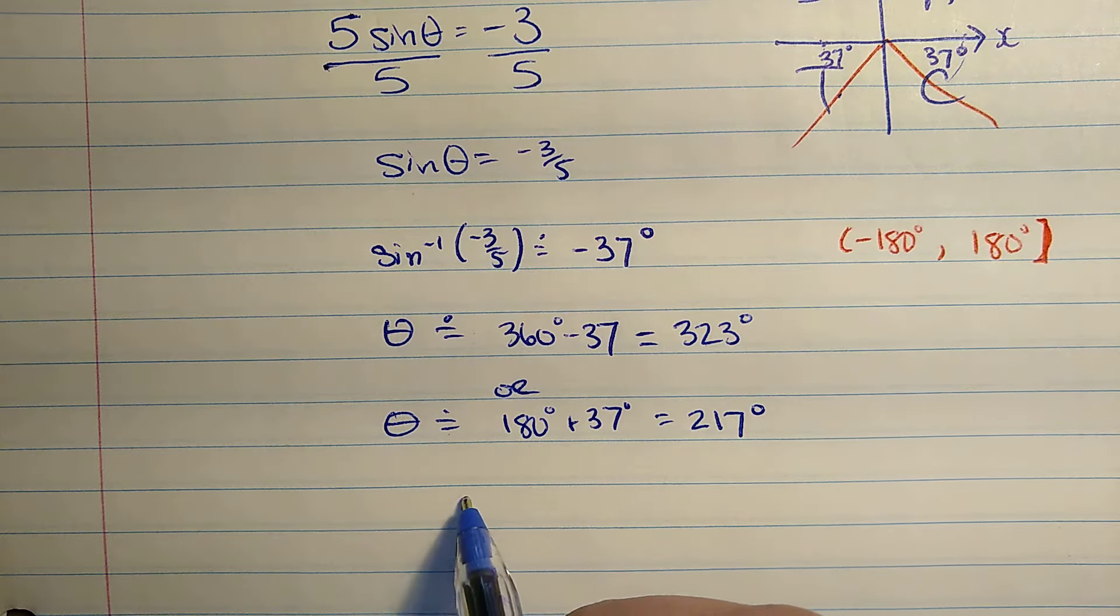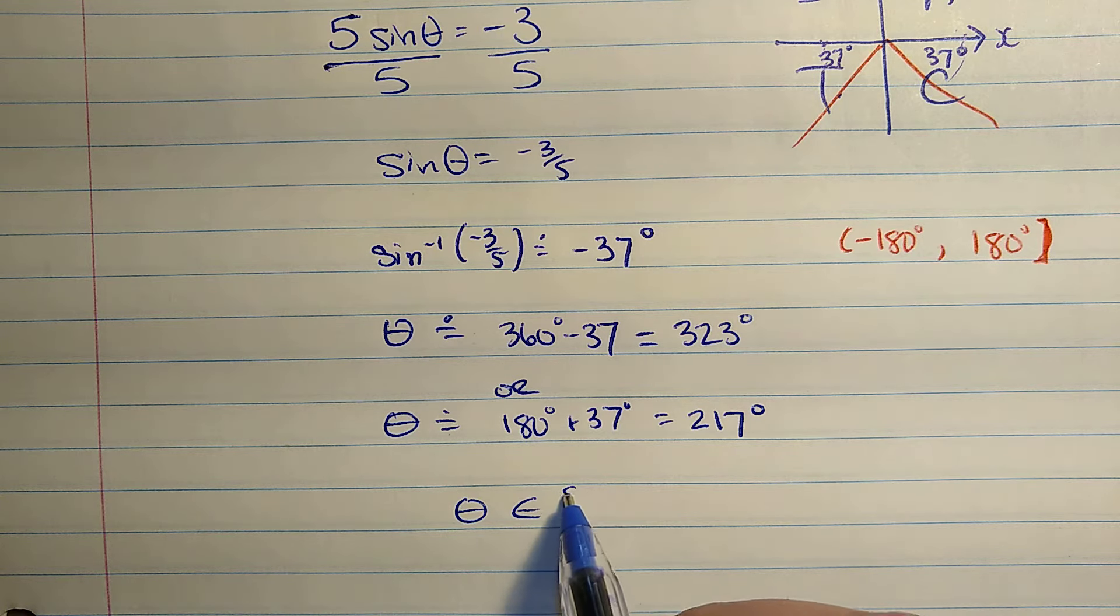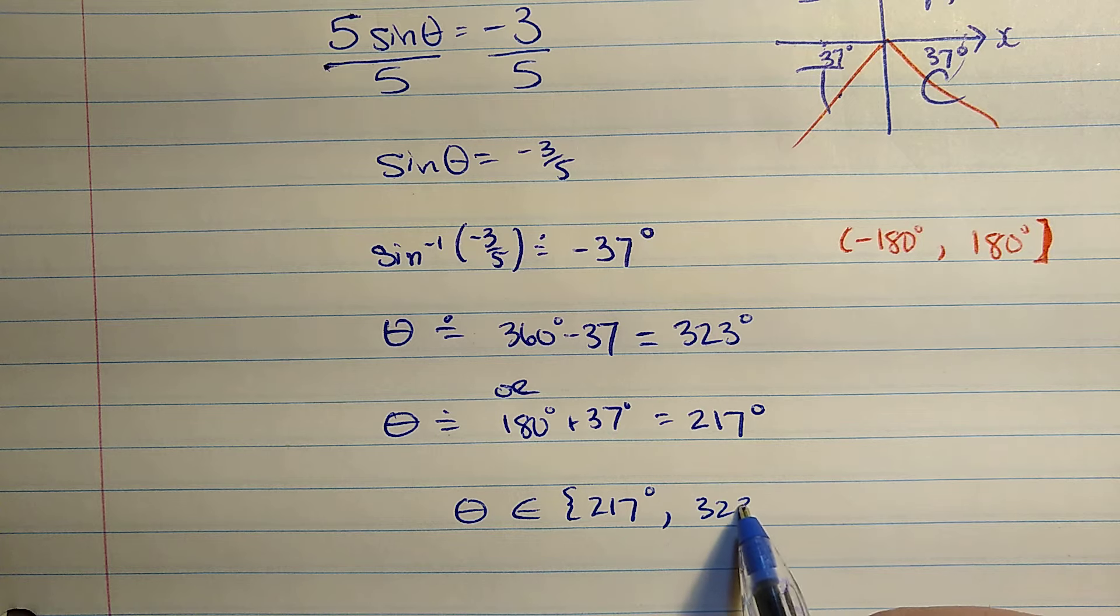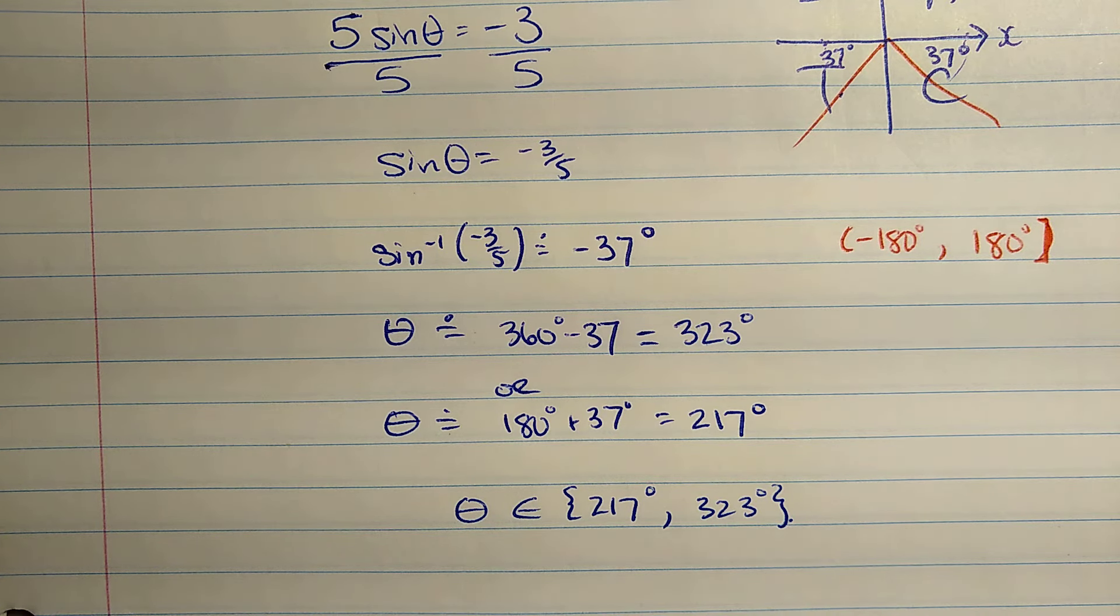So those are the two solutions. And another way to write this, if you like, using set notation, is that theta is in this set: 217 degrees, 323 degrees. So those are the two solutions for that trig equation.